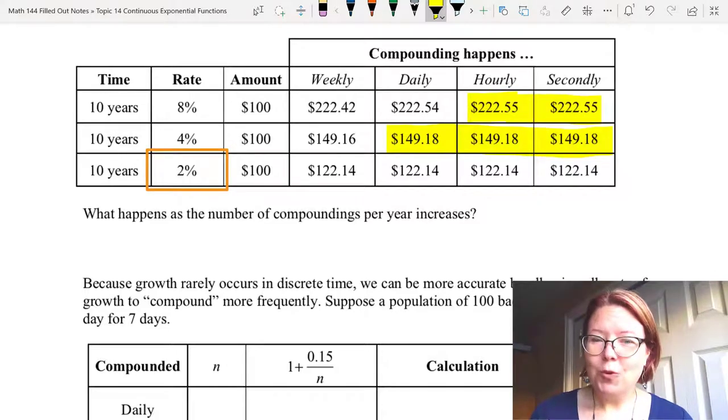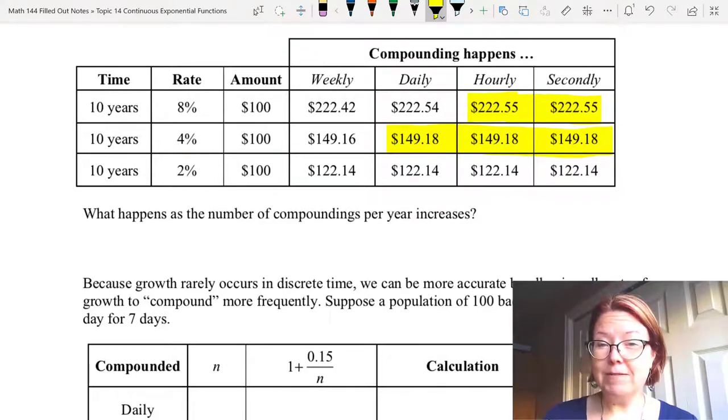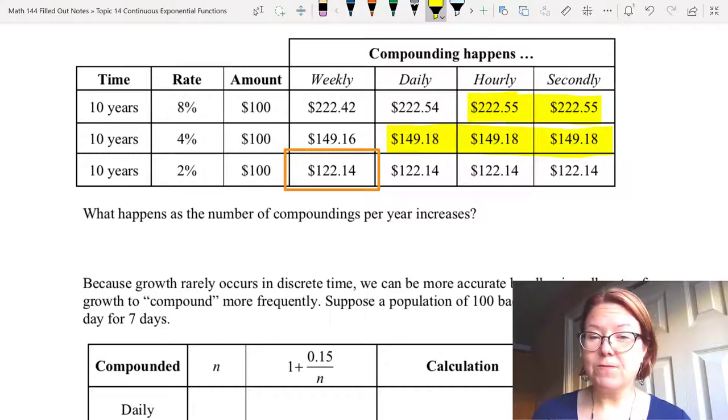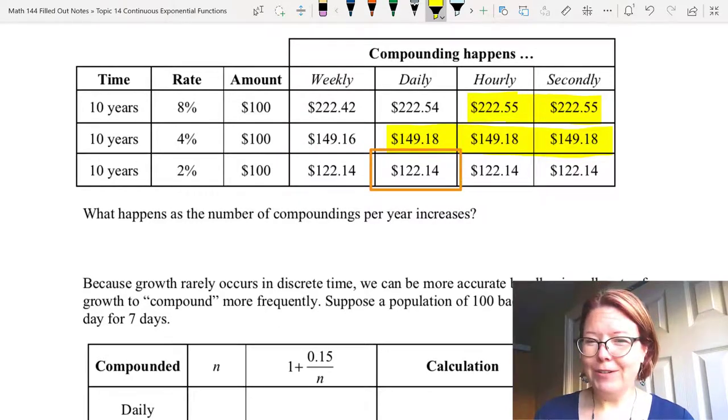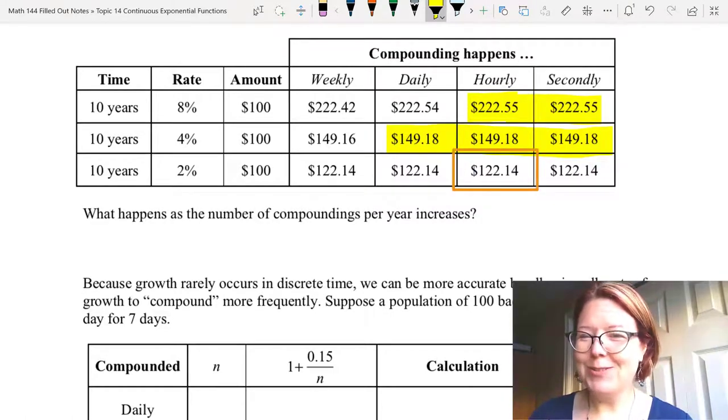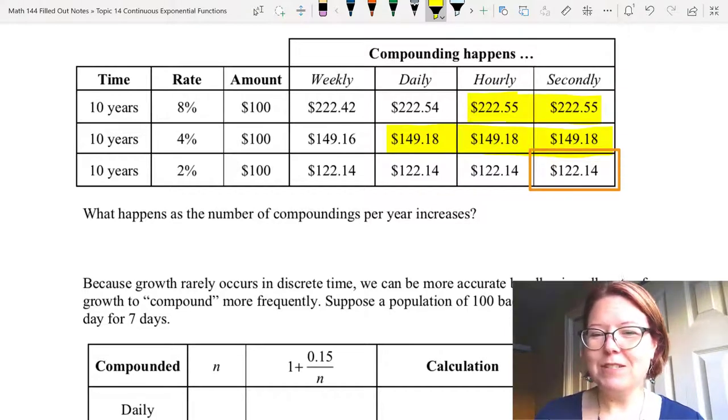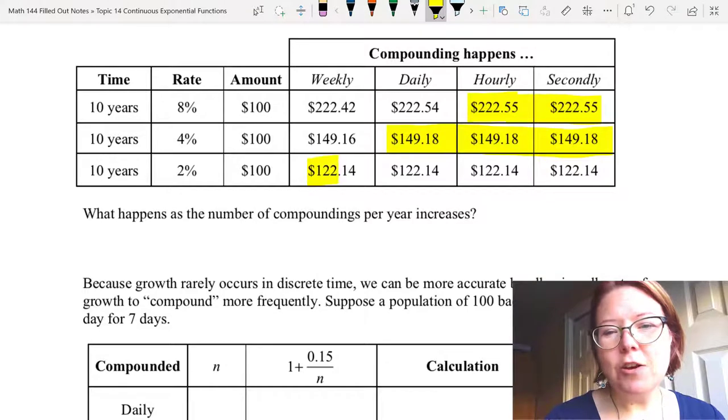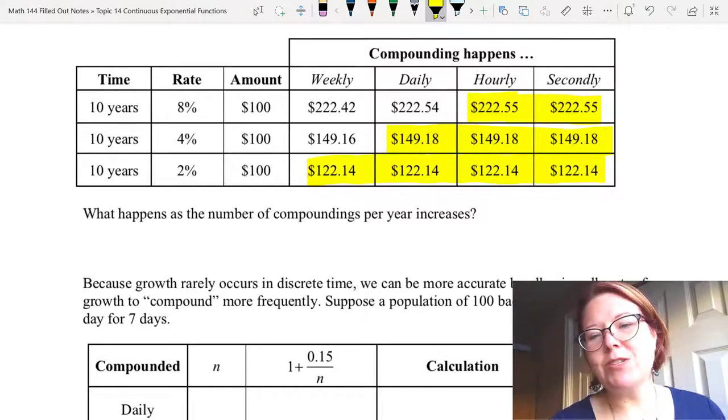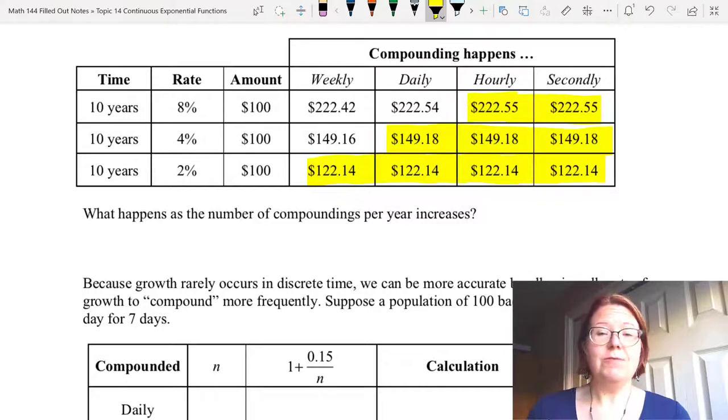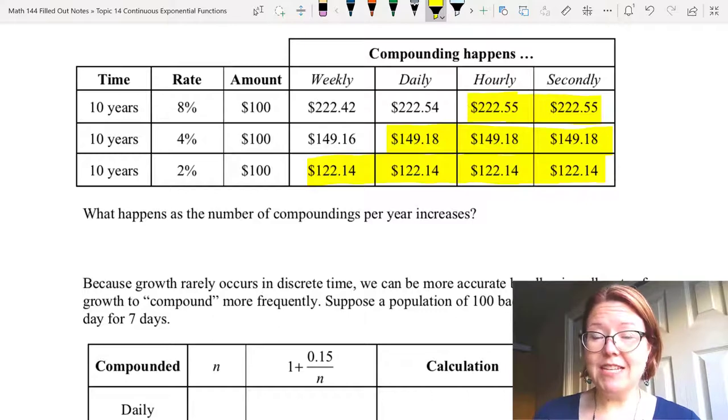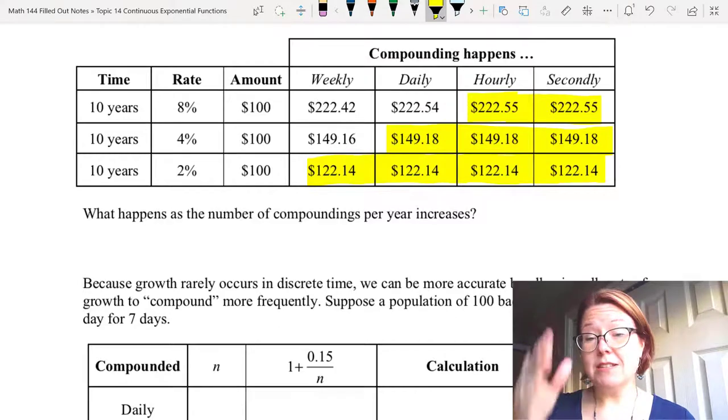Finally, let's look at a rate of 2%. After 10 years of weekly compounding, we would have $122.14. With daily, hourly, and secondly compounding, we would have $122.14 for all of them. So here because of the low interest rate, we get a stabilization that's much faster and happens even if we just go down to the weekly compounding. You'll find that for lower interest rates, this is the case. If the interest rate is higher, it takes more frequent compoundings to get that stabilization in the cents digit.